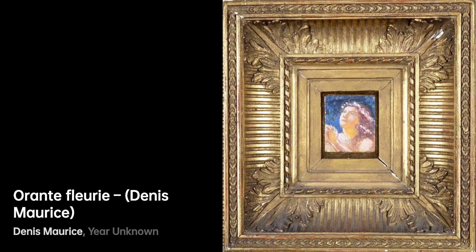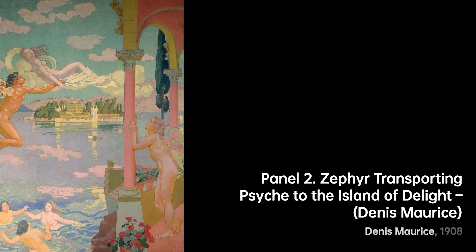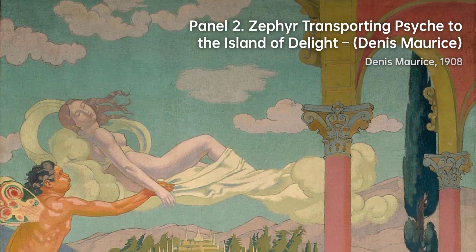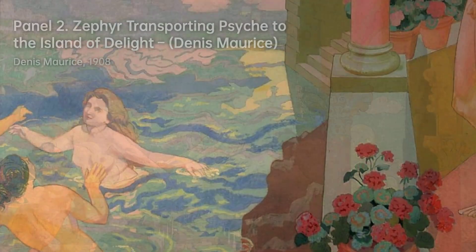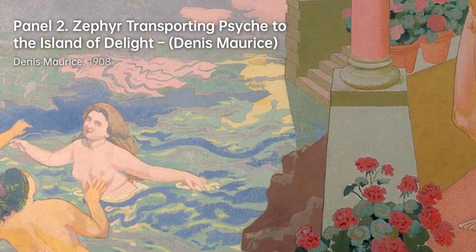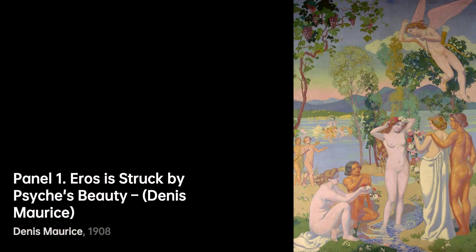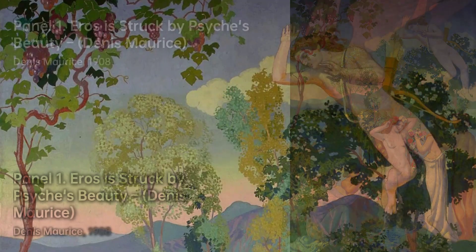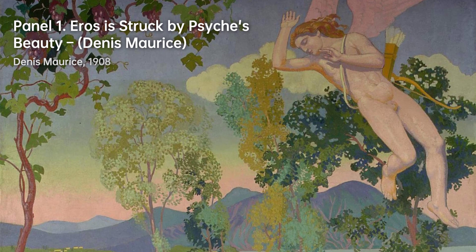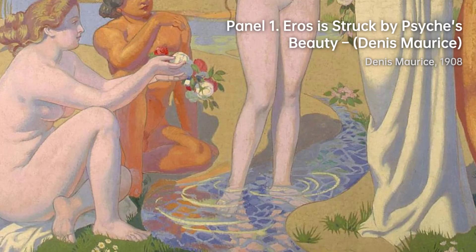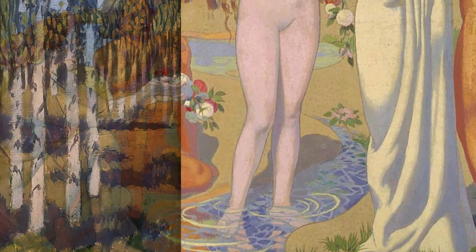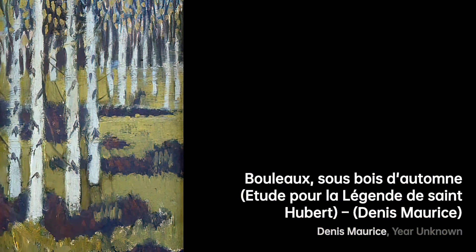As Denis matured as an artist, he began to explore different subjects and styles. He drew inspiration from various sources, including literature, mythology, and religious themes. His works evolved, reflecting his deepening understanding of spirituality and his desire to capture the essence of the human experience. He experimented with different techniques, using bold brush strokes and rich colors to create dynamic and expressive compositions. His art became highly regarded, and he gained recognition for his unique style and artistic vision.